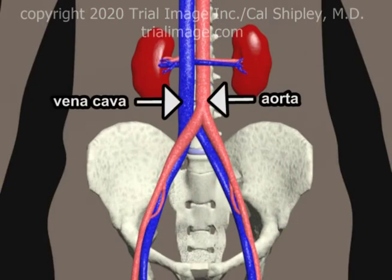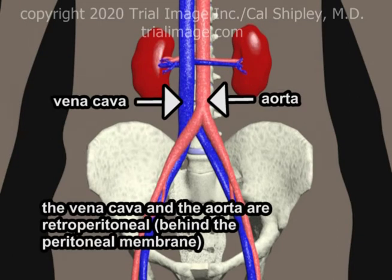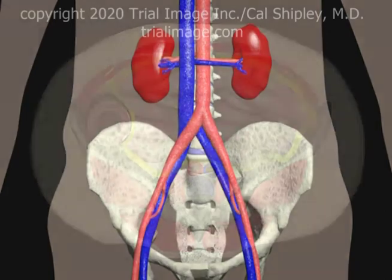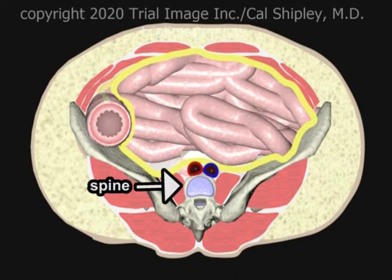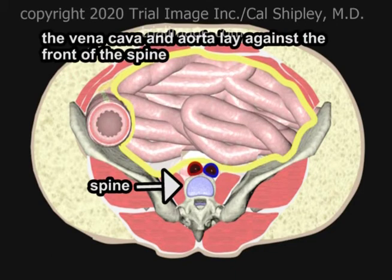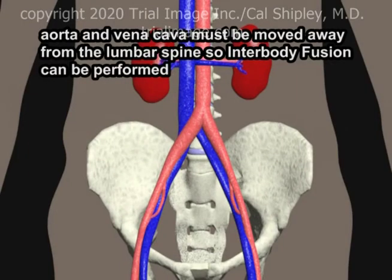The largest vein in the body, the vena cava, and the largest artery, the aorta, are both retroperitoneal structures. Looking again at a cross-sectional view of the abdomen from above, the aorta and vena cava lie behind the peritoneal membrane and against the lumbar spine. Because of their anatomical location, both the vena cava and the aorta must be moved away from the lumbar spine in order for the interbody fusion to take place.